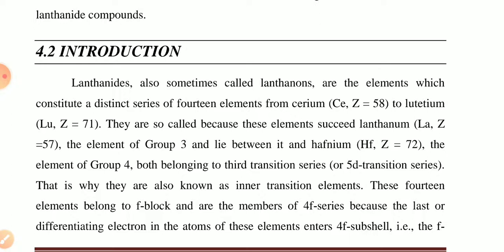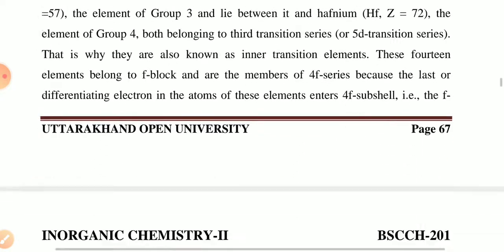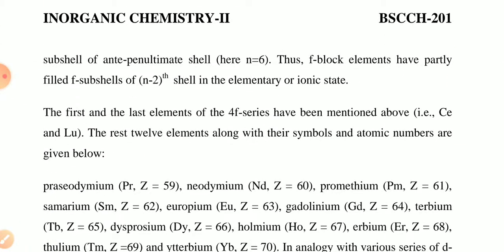These 14 elements belong to the F-block and are members of the 4f series because the last distinguishing electron is filled in the 4f subshell. The number of the subshell is 6 for this. The F-block elements have a partially filled F subshell, which is the (N-2) shell, in the elementary or ionic state.